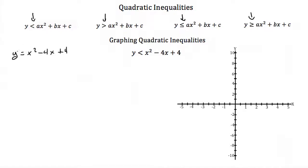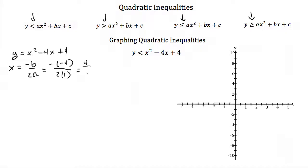To graph this, it's usually easiest to find the axis of symmetry and our vertex. Our axis of symmetry has the equation x equals negative b over 2a. Our b would be negative 4, so we'd have negative negative 4 over 2 times a, which is just 1. A negative negative 4 is 4, and 2 times 1 is 2, so our axis of symmetry has the equation x equals 2.